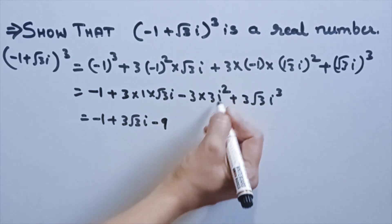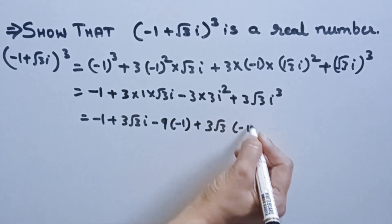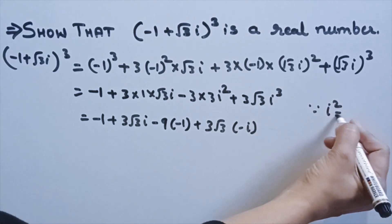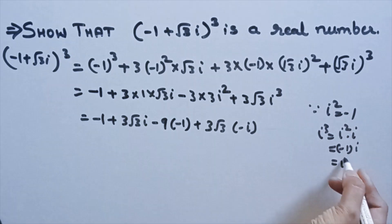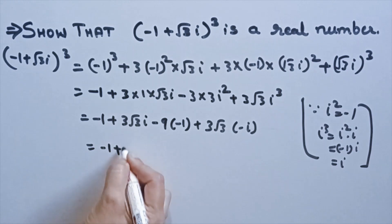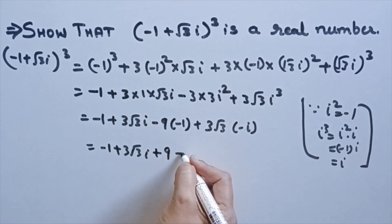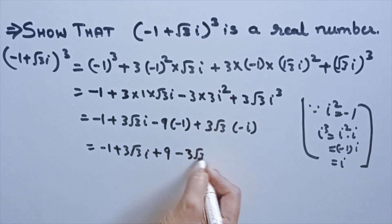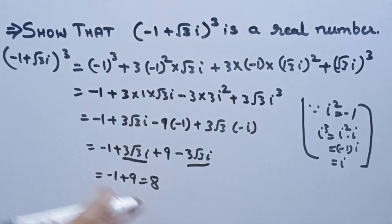Since i² = -1, i³ = i² × i = -1 × i = -i. So substituting: -1 + 3√3i - 9(-1) + (-3√3i) = -1 + 3√3i + 9 - 3√3i. The imaginary parts cancel, giving -1 + 9 = 8, which is a real number. Hence proved.